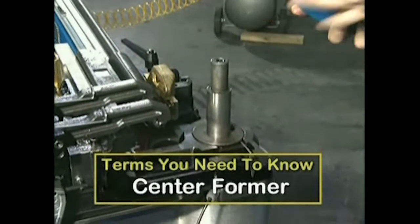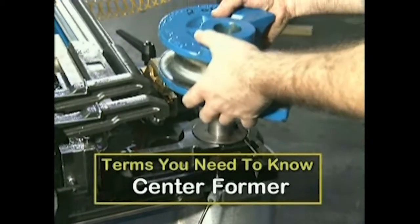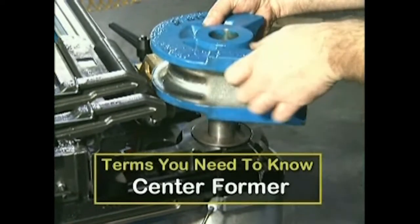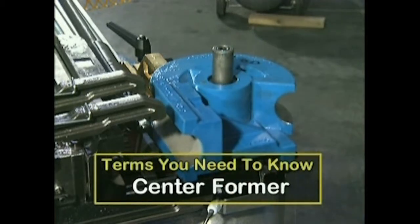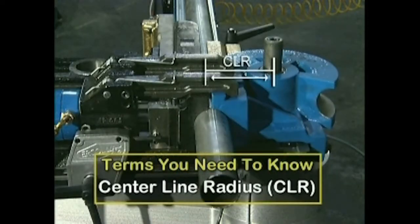Center former, forming tool with a specific profile and CLR designed to allow workpiece to form a round edge to desired angle. Center line radius or CLR is the distance from the center of the former to the center line of the material to be bent.